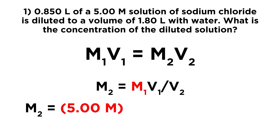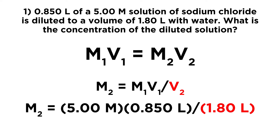Now we just plug in what we know. M1, the concentration of the initial solution, is 5 molar — that's our stock solution of sodium chloride. V1 is 0.850 liters, the initial volume. We diluted it to V2, which is 1.80 liters with water — that's the final volume. We put these in a calculator and get 2.36 molar. This was a dilution, so our answer must be a lower concentration than the initial 5 molar, and that is the case — so this checks out.